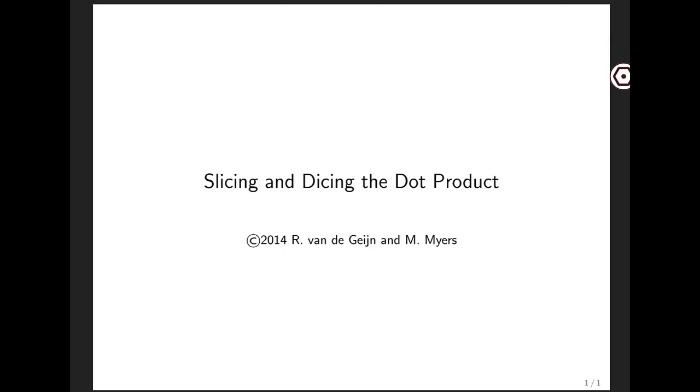One of the big ideas in this class that we try to get across is how to think in terms of vectors and sub-vectors, and matrices and sub-matrices. In this unit, we're going to introduce you to this by looking at how to partition vectors into sub-vectors, and how this affects the computation of the dot product.